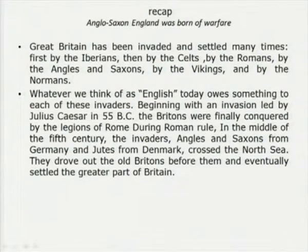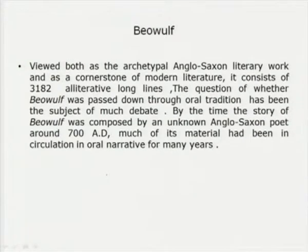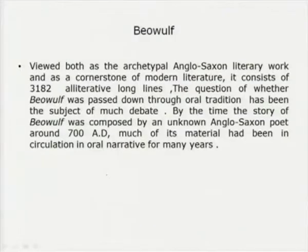In the middle of the 5th century, we find the Angles and Saxons from Germany, and Jutes from Denmark, crossing the North Sea — bringing a Nordic flavor to the English language. They drove out the old Britons and eventually settled in the greater part of Britain. When we covered the Old English period, we saw that the most significant work was the Anglo-Saxon literary work Beowulf — a Germanic archetypal narrative consisting of alliterative long lines that set the tradition of verse in English literature.